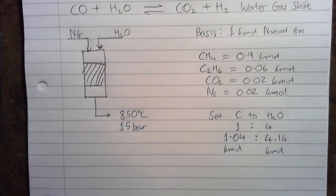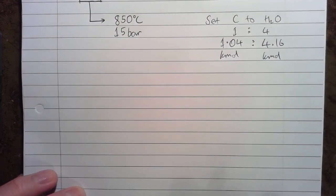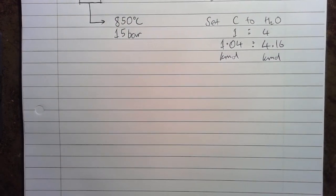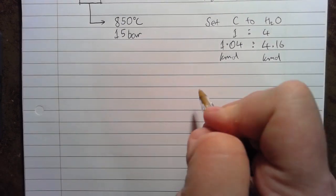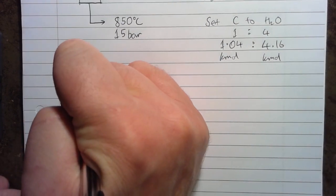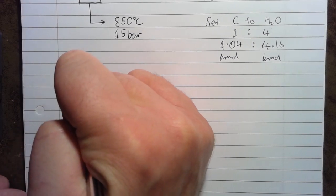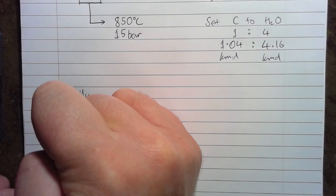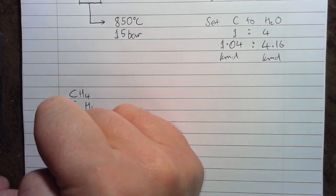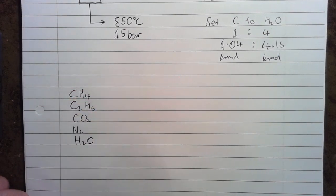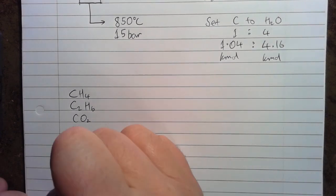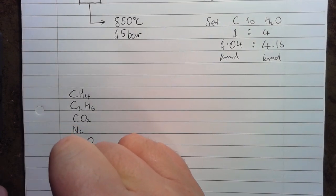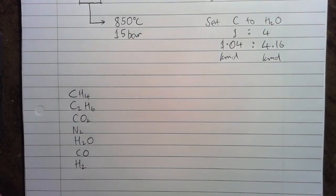Now, we're going to use this information to set up a table of what's coming in and what's going out, so that we can solve the material balance. So, we have CH4, C2H6, CO2, N2. We also have the H2O coming in as the form of steam. We've got CO and H2 as well, they're not coming in, but we need to include those as the products.